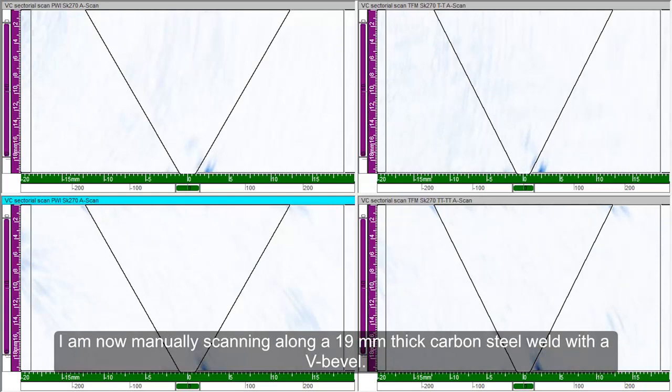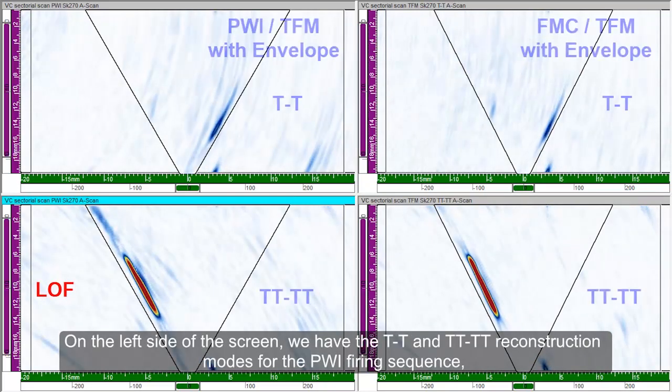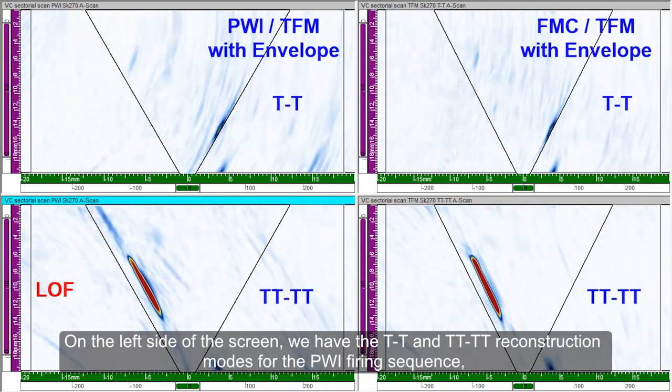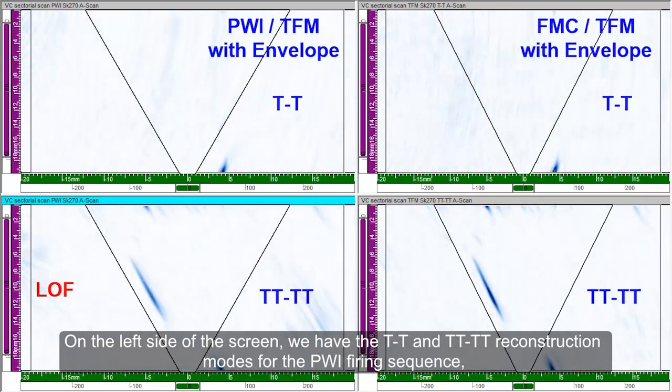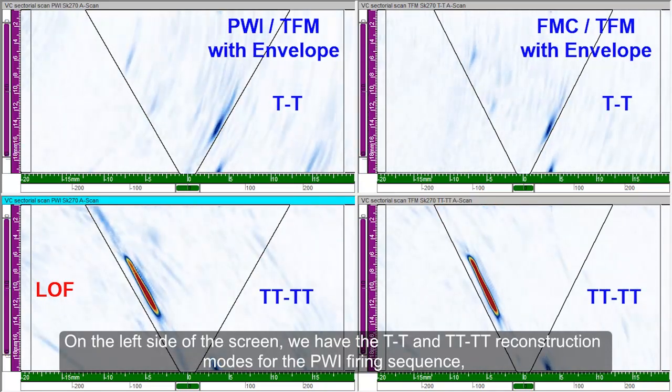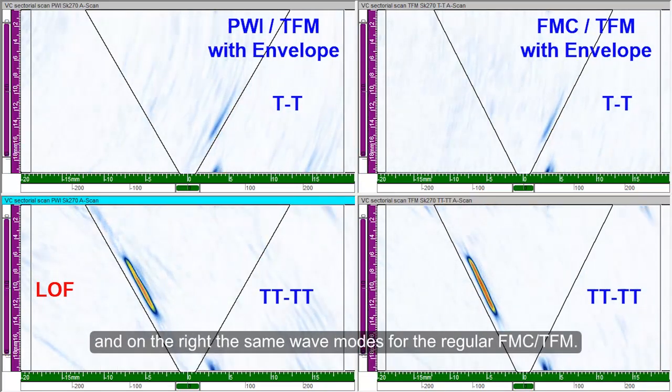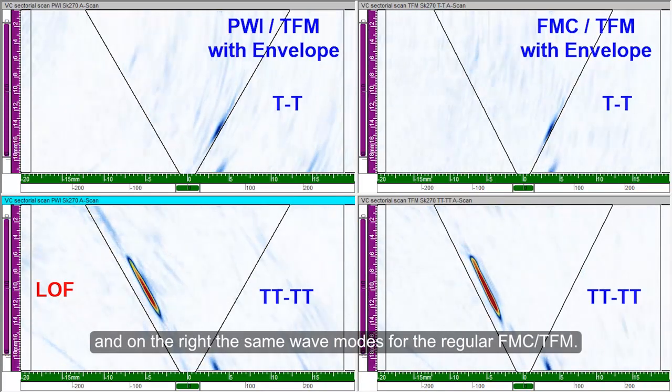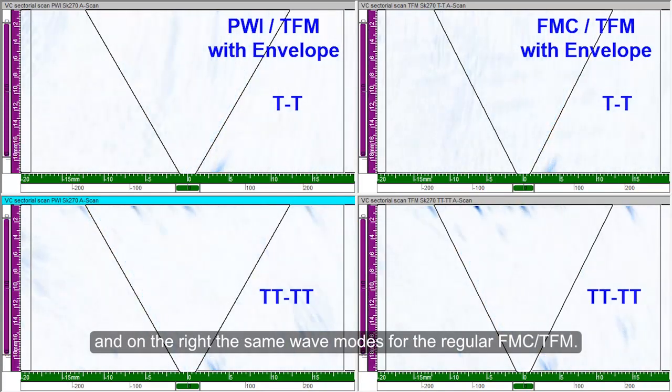I am now manually scanning along a 19 mm thick carbon steel weld with a V-bevel. On the left side of the screen, we have the T-T and TT-TT reconstruction modes for the PWI firing sequence. And on the right, the same wave modes for the regular FMC TFM.